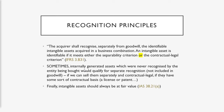The recognition principle: there are four steps to the acquisition method per IFRS 3.5A to D. First, identify the acquirer — done. Second, determine the acquisition date — done. Third, recognize the identifiable assets acquired, liabilities assumed, and then NCI. And finally, recognize and measure goodwill or gain from bargain purchase.